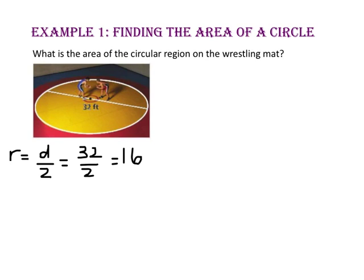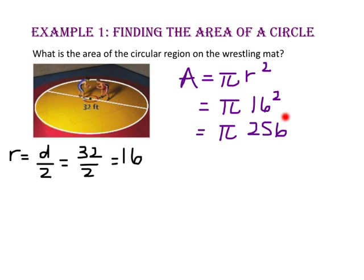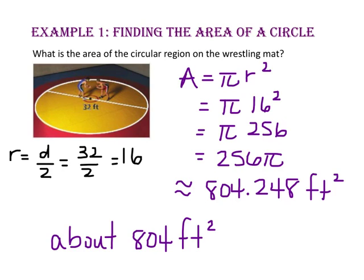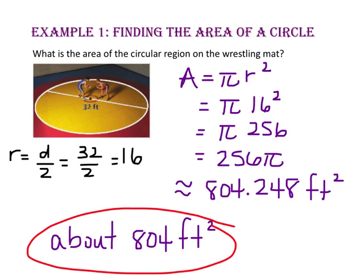To find the area of a circle, we take pi times the radius squared. Since the radius is 16 feet, we square 16 to get 256, then multiply by pi for 256π. Using the pi key on your calculator to multiply 256 times pi gives us approximately 804.248 square feet, or about 804 square feet.